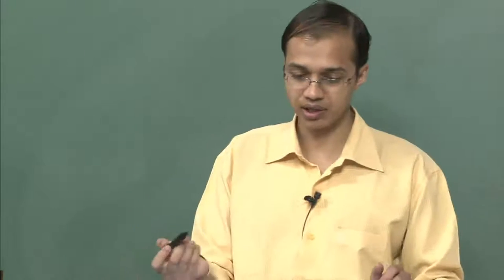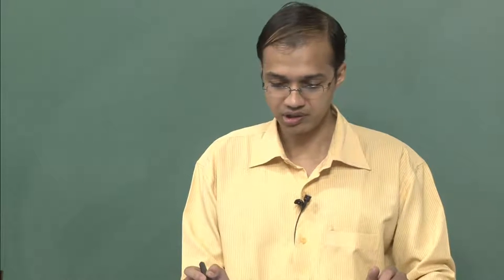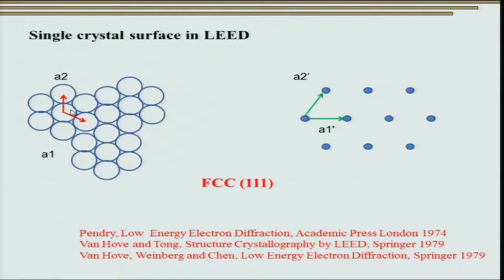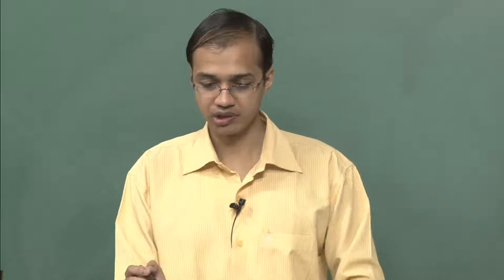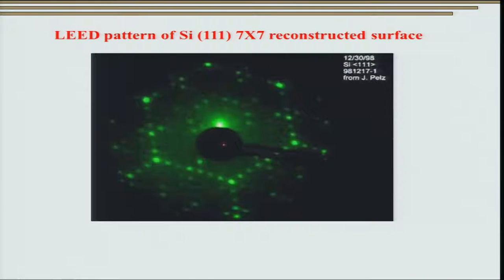For example, consider the 111 plane in FCC. You can calculate the reciprocal vectors using the formula: A* equals B cross C divided by A dot (B cross C). You can extend similar formulas and calculate the entire reciprocal space. What actually appears in low energy electron diffraction is exactly this. As an example, here we see a LEED pattern of the silicon 111 7×7 reconstructed surface, where the symmetry is directly reflected in the reciprocal space.